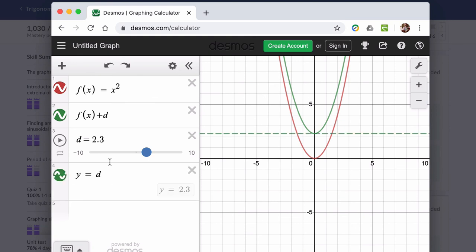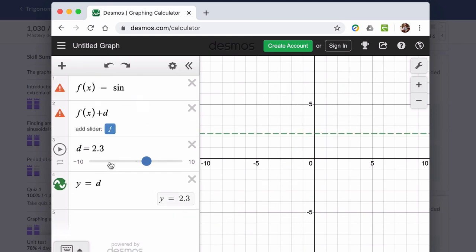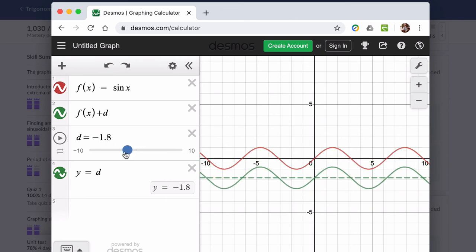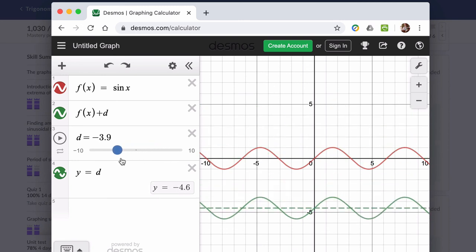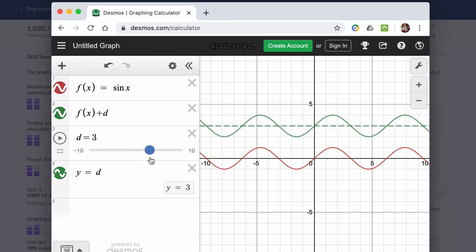But the special case of the trig function is that the midline is moving up and down, so that has a special property in the trig function. But also, you can just think of it as a vertical translation. So this is nothing new in functions. It's just vertical translations. All right, hope that helped.